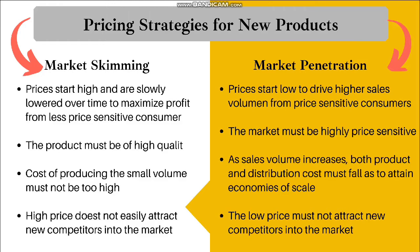The low price must also not attract new competitors into the market. In simple terms, skimming pricing is used when a new product is sold at a relatively high price because of its uniqueness, benefits, and features. Slowly, as the product gets older in the market, the price is dropped. An example of market skimming is Apple iPhone — when iPhone 13 was launched, iPhone 12 was also available, and both were sold in large quantities at a very high price.